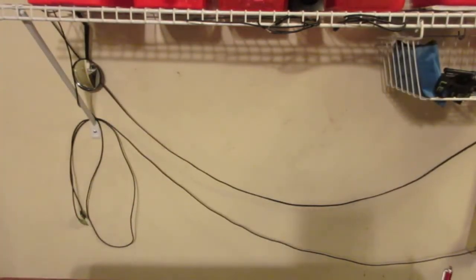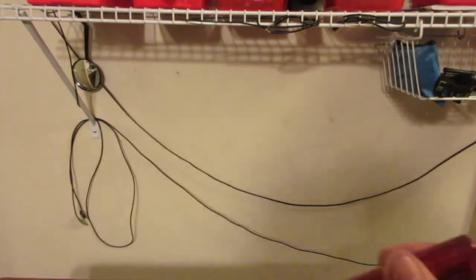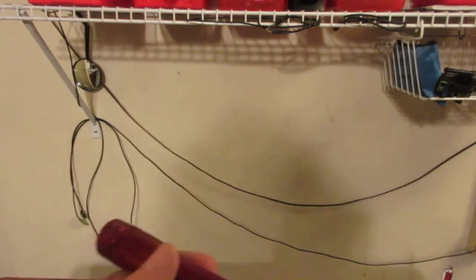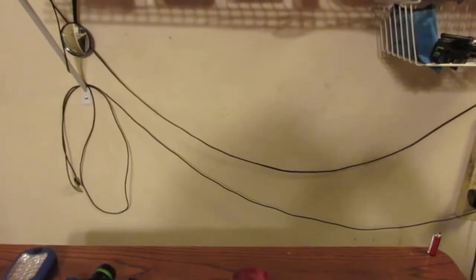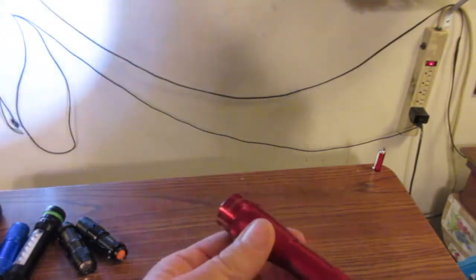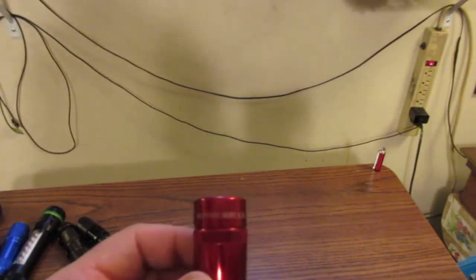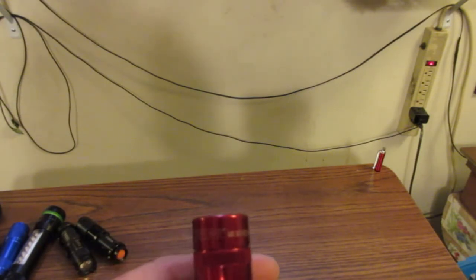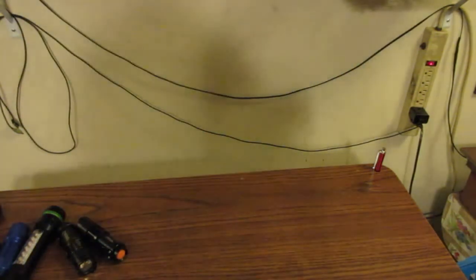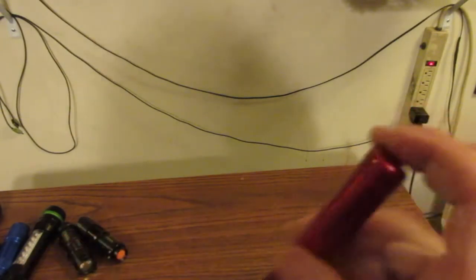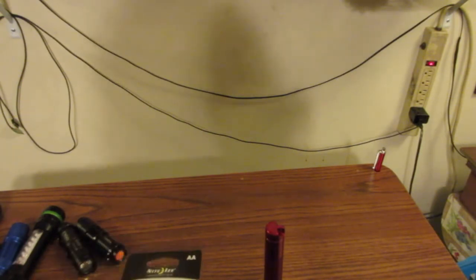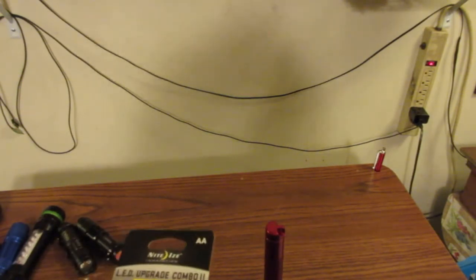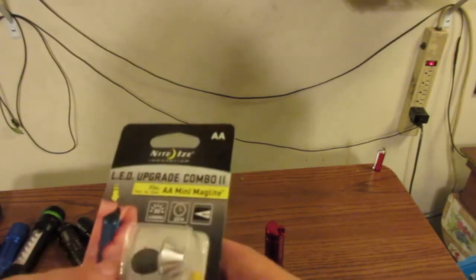This is my new 272 lumen Maglite. I don't think it's as bright as this Cree. I don't know what happened, the camera just went dead on me. But anyway, it is my 272 lumen Maglite LED Pro, and I didn't like the tail switch.